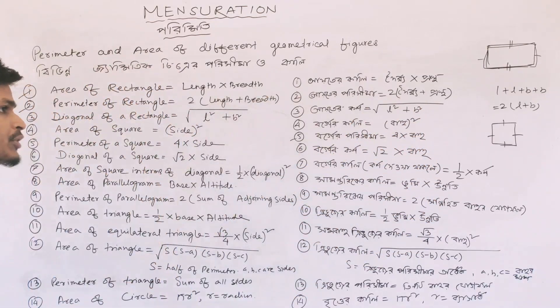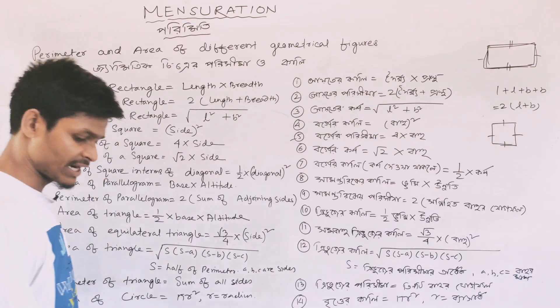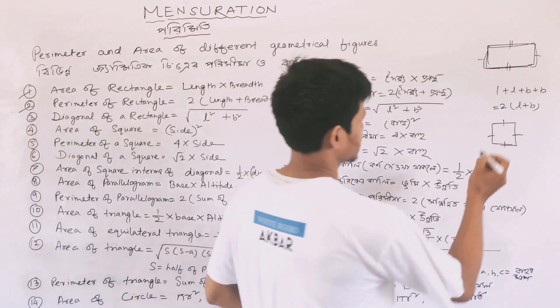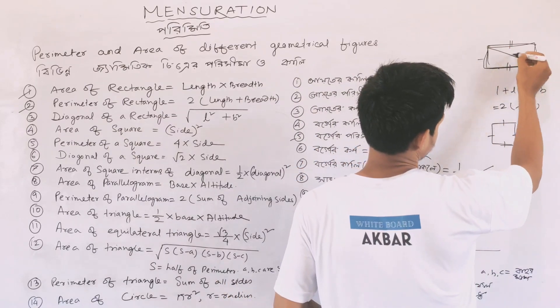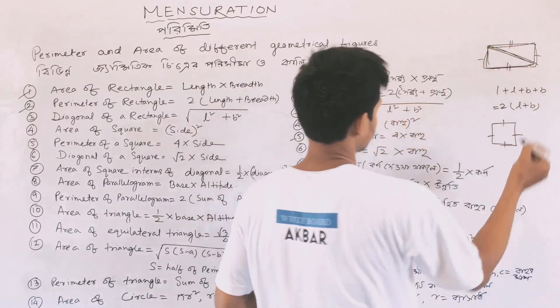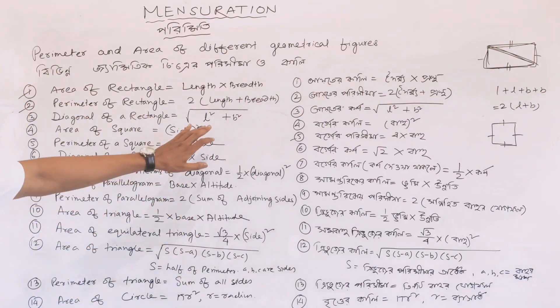Now we have to find the formula for the diagonal of a rectangle. This is a rectangle and this is a diagonal. This is the diagonal distance. We have to find it using length and breadth.